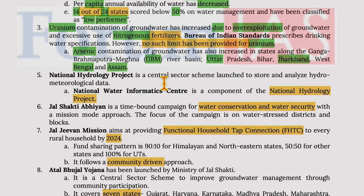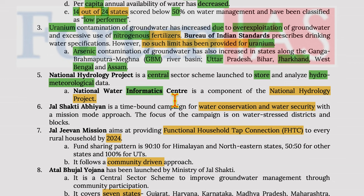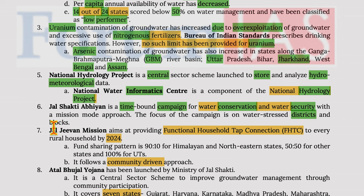The National Hydrology Project is a central sector scheme launched to store and analyze hydrological and hydrometeorological data. The National Water Informatics Centre is a component of this project. Jal Shakti Abhiyan is a time-bound campaign for water conservation and water security with a mission-mode approach, focused on water-stressed districts and blocks. Jal Jeevan Mission aims at providing functional household tap connections to every rural household by 2024.